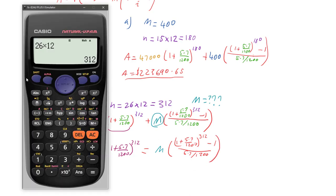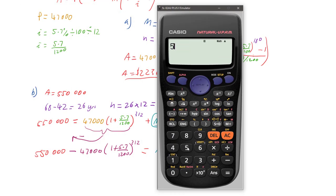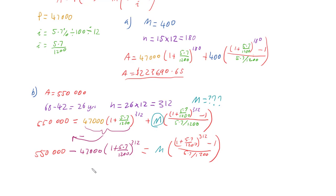So we need to get this into our calculator. So we have 550,000 minus 47,000 times (1 plus 5.7 over 1200) to the power of 312. And so that leaves us with a gap of $343,842.81. So we have 343,842.81 equals M times (1 plus 5.7 over 1200) to the power of 312 minus 1, over 5.7 over 1200.